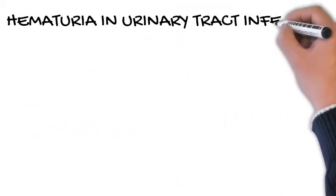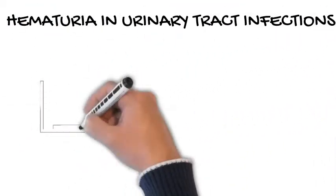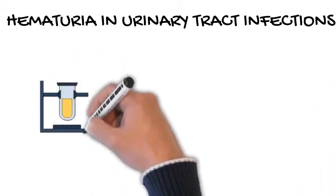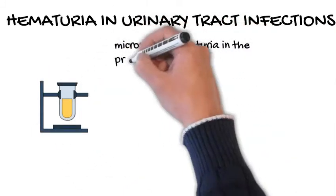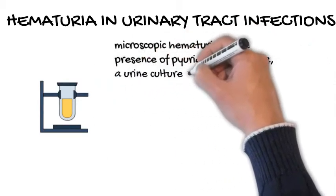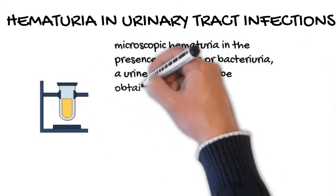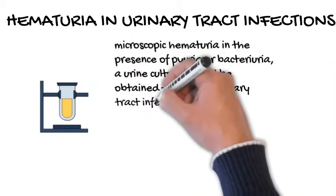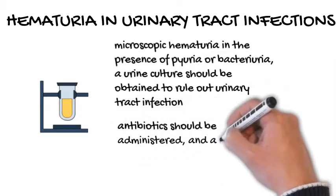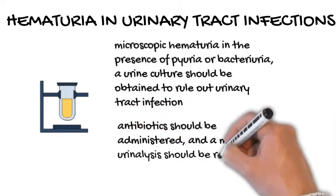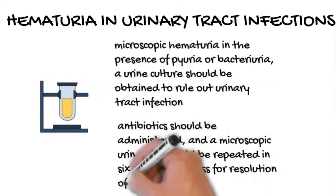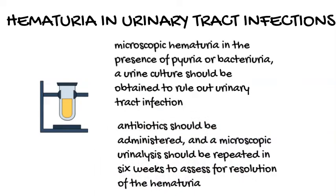Hematuria with urinary tract infections: If a patient has microscopic hematuria in the presence of pyuria or bacteriuria, a urine culture should be obtained to rule out urinary tract infection. Culture-directed antibiotics should be administered, and a microscopic urinalysis should be repeated in six weeks to assess for resolution of the hematuria.